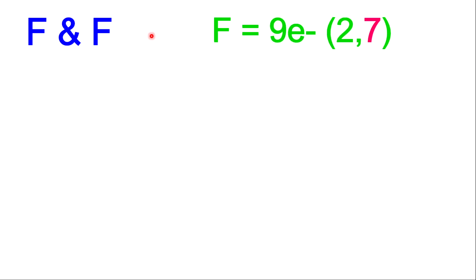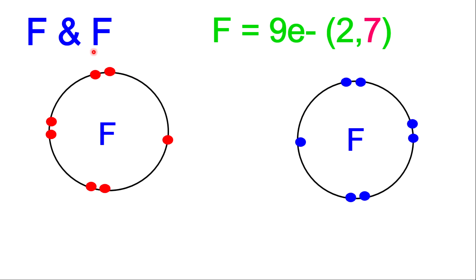The first example I want to look at is bonding fluorine and fluorine. The first step is always to establish the number of valence electrons. Fluorine has 9 electrons, therefore the electron configuration is 2 and 7, making the valence electrons 7. Once you establish the valence electron, you can draw the atoms that are required. We are working with 2 fluorines, so each atom must contain 7 electrons, which is the valence electron. There is no need to draw the other shells — we are only looking at the valence shell.